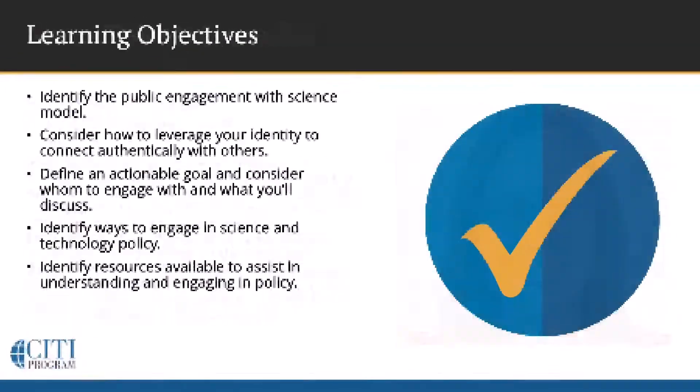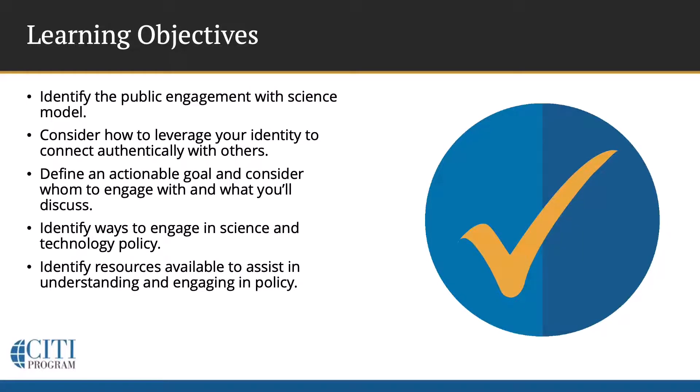We'll start by identifying the public engagement with science model. Then we'll consider how to leverage your identity to connect authentically with others. We'll define an actionable goal and consider whom to engage with and what you'll discuss. Then we'll identify ways to engage in science and technology policy. And finally, we'll identify resources available to assist in understanding and engaging in policy.